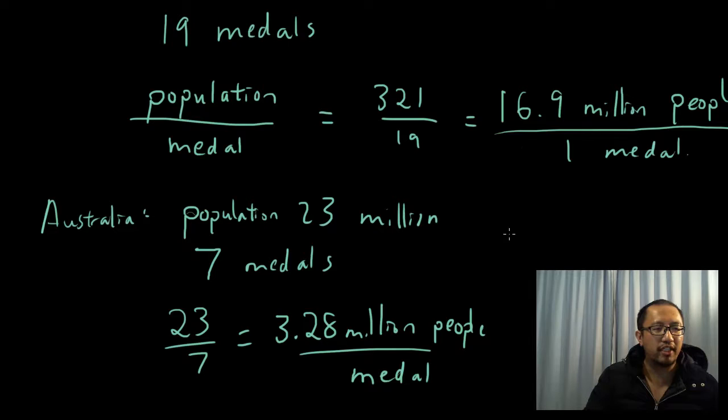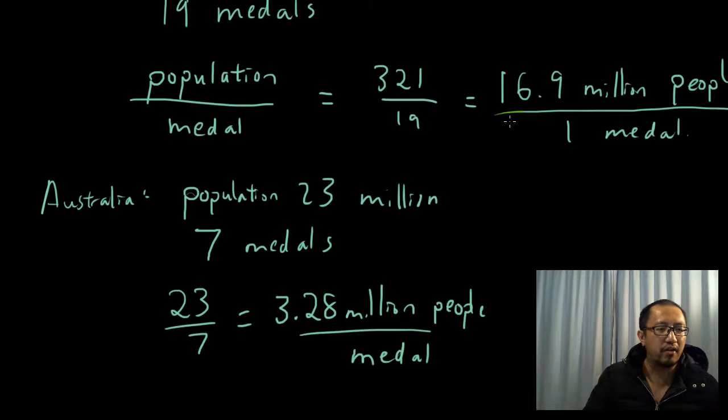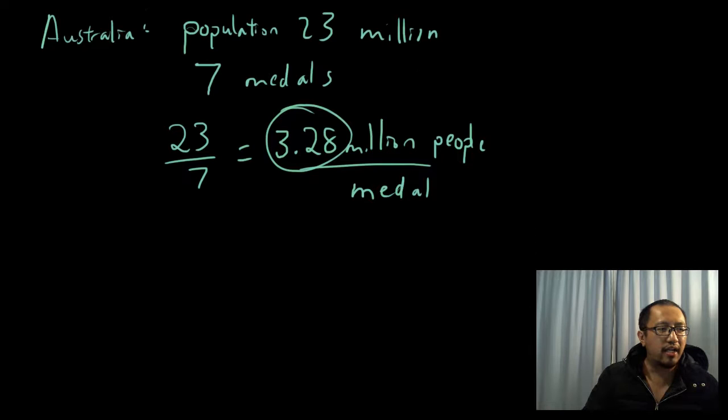So that's not too bad. It's a lot better than the United States because they need 16.9 million people to get one medal, whereas we only need 3.28 million people to get a medal. So the smaller this number is, the better.